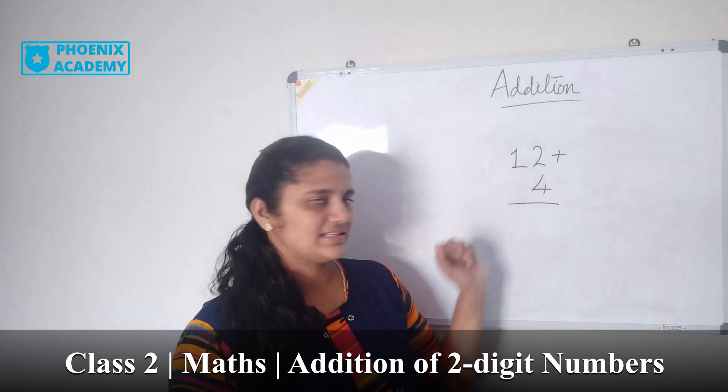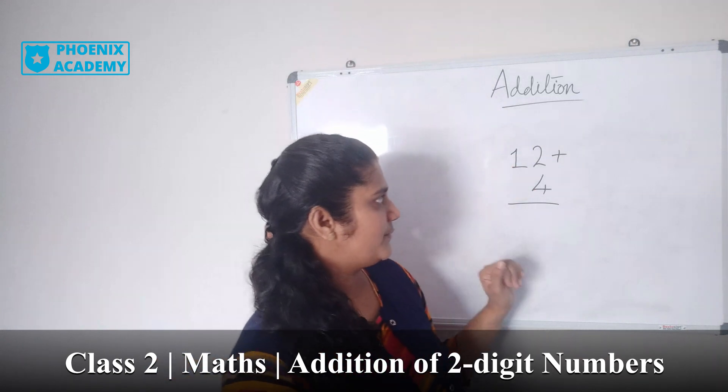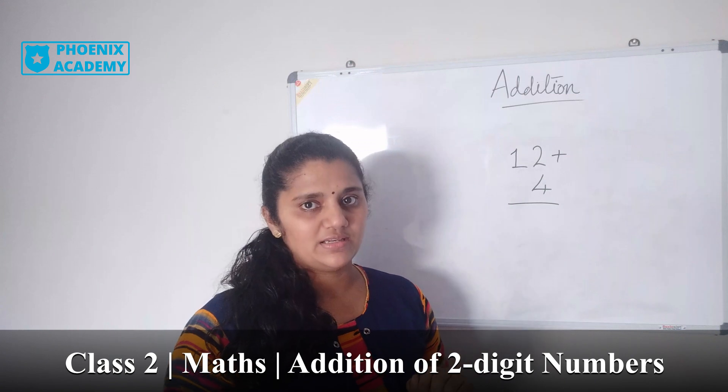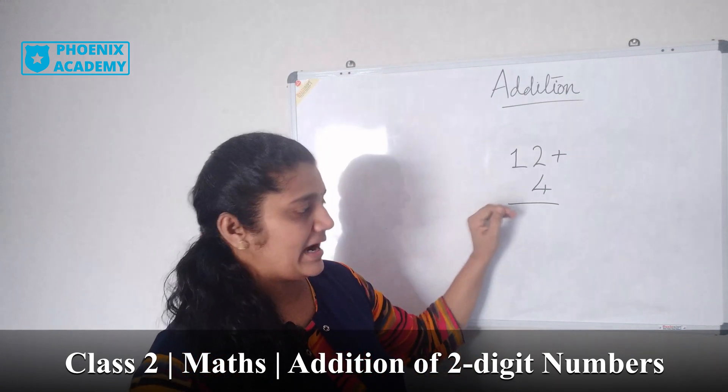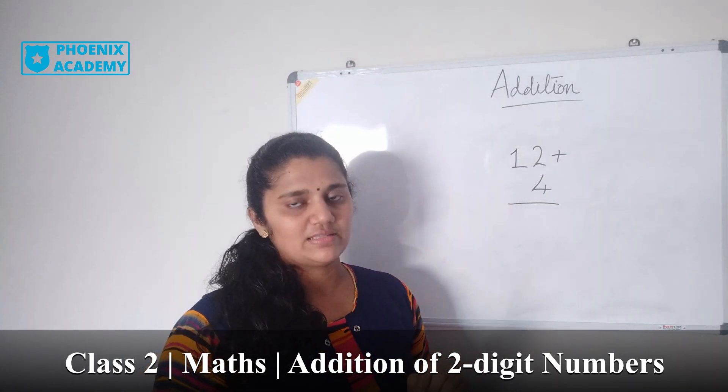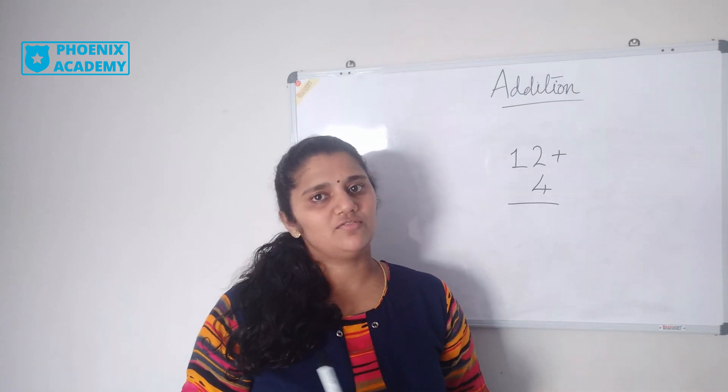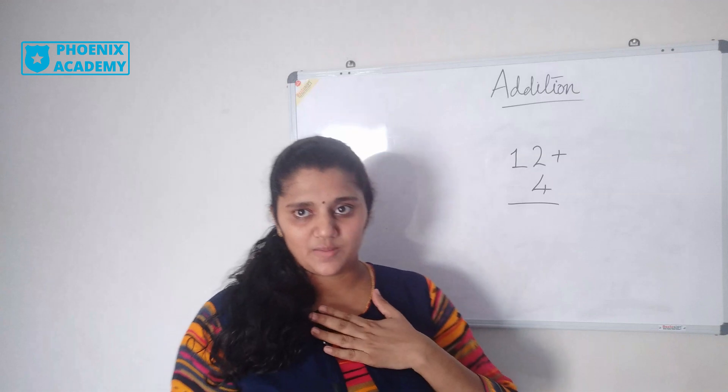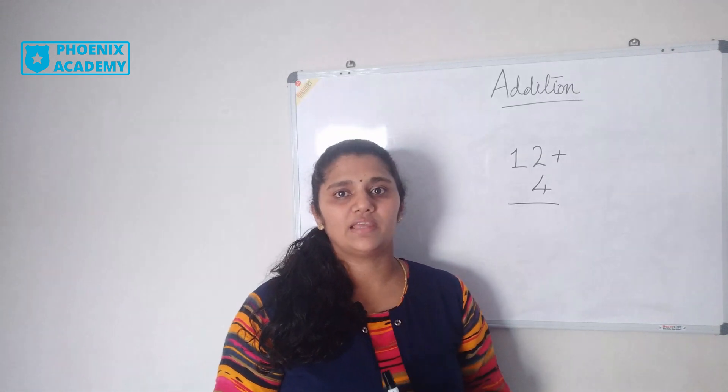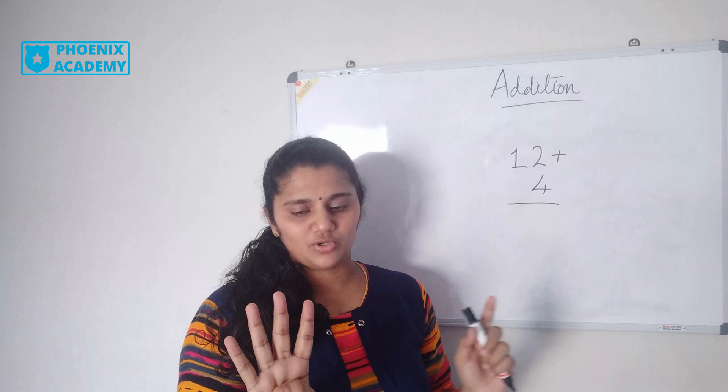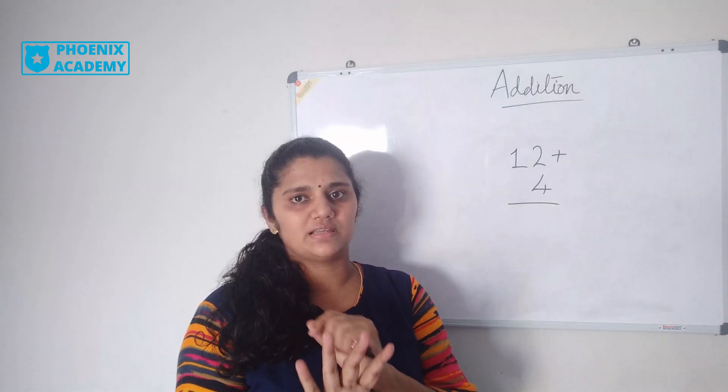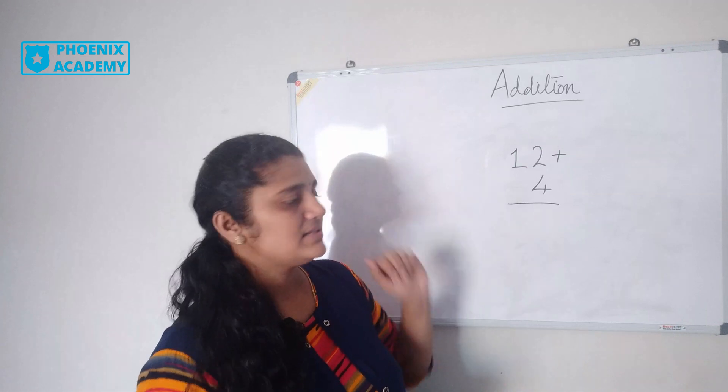Let's do this example: 12 plus 4. Here we have one two-digit number and one one-digit number. We can add this in two different ways. We've already learned the first method in the last session. Keep 12 in your mind and 4 in your hand. From 12, the next numbers are 13, 14, 15, and 16. So the answer is 16.